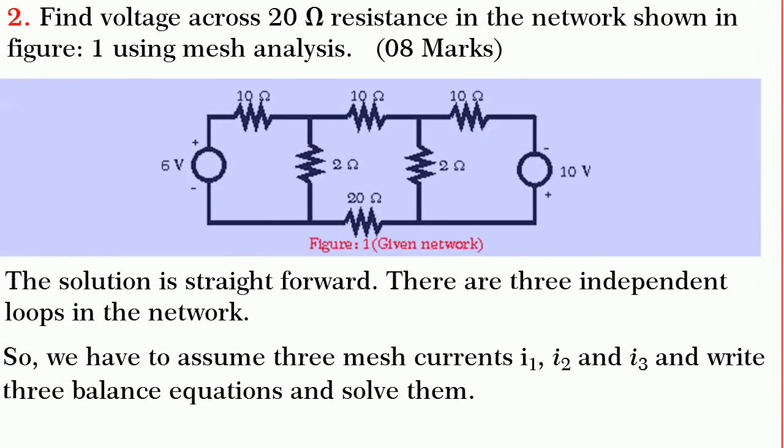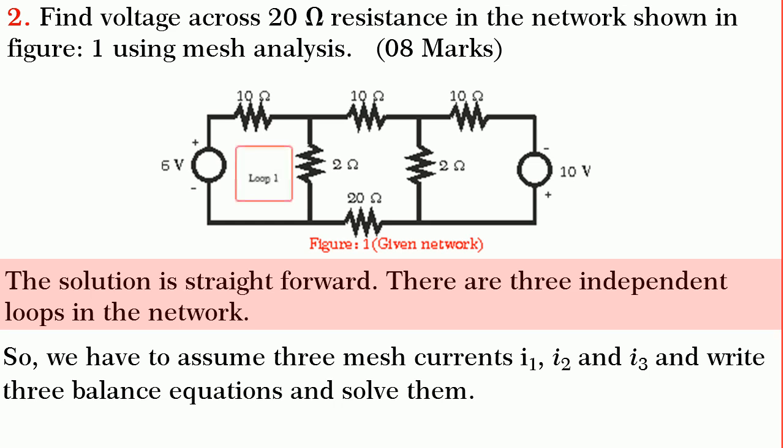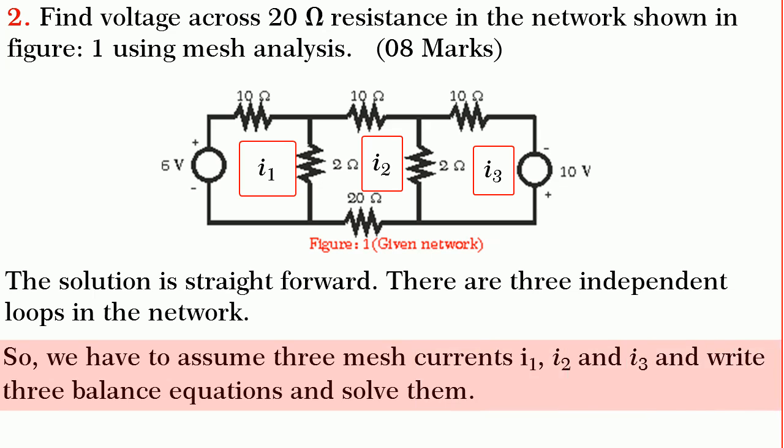Friends, next we shall take a question on mesh current method. In this problem, we are required to find the voltage across 20 ohm resistance. The solution is simple and straightforward because you see that there are 3 independent loops in the network. So, we have to assume 3 mesh currents and write 3 balance equations and solve them.